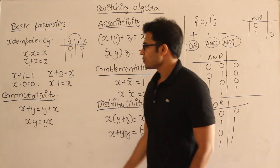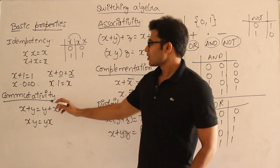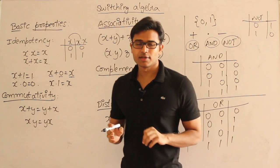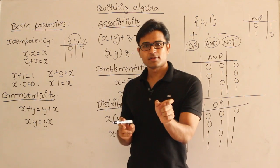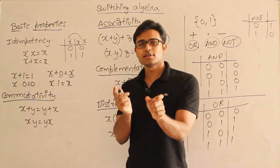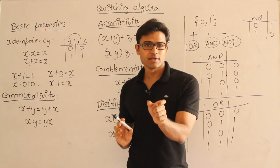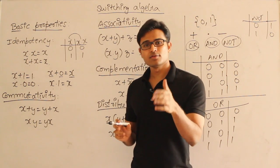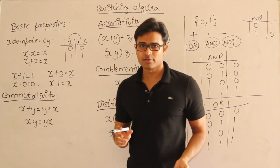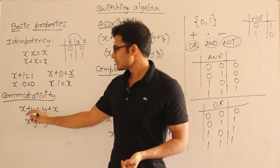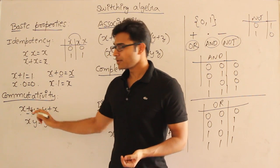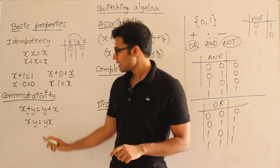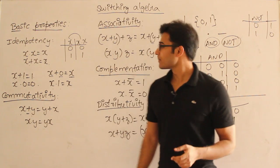Next is commutativity. An operator is given and operands are given — can you interchange the position of the operands and is the operator value still valid? Yes, they are valid. So x OR y equals y OR x, and similarly for AND.